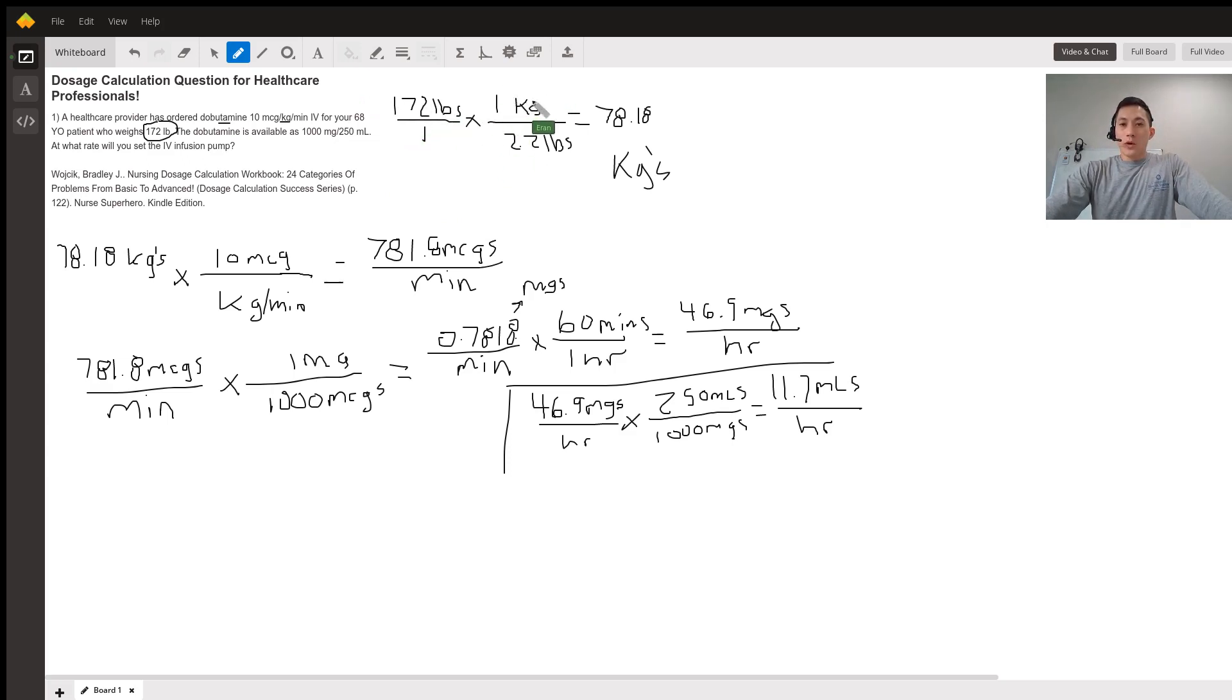Now we set it up where we have one kilogram over 2.2 pounds. We want a fraction where one unit's on top, the other unit's on bottom, so we can cross it out. When we do that, we have 172 divided by 2.2, which equals 78.18 kilograms. We're left with the unit of kilograms. Now we have the patient's weight in kilograms.